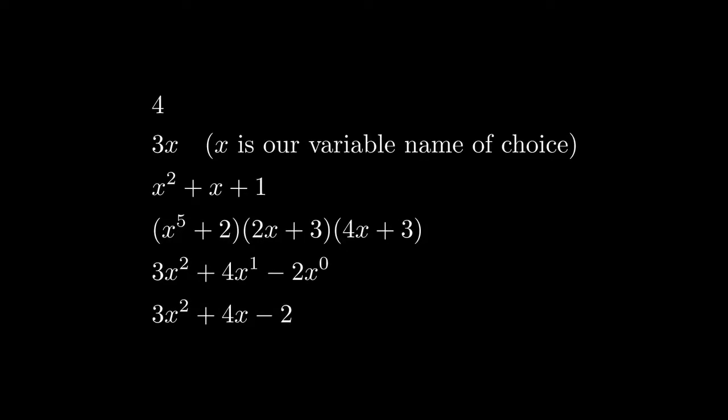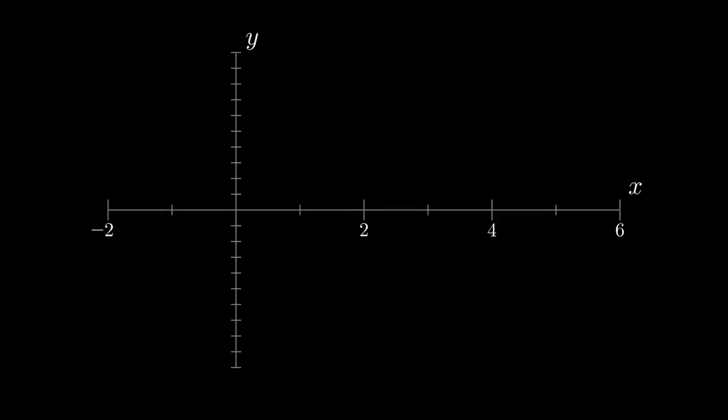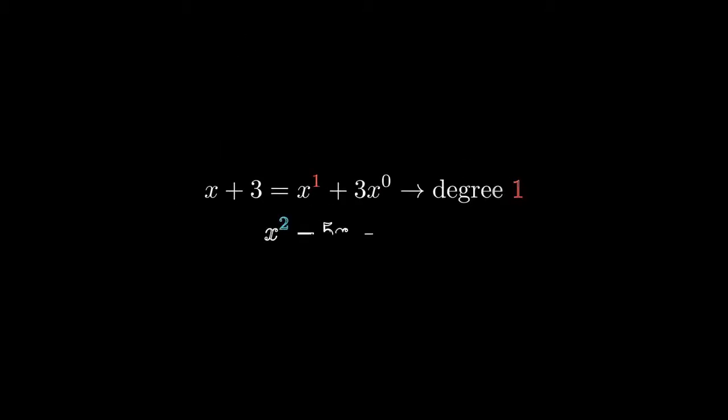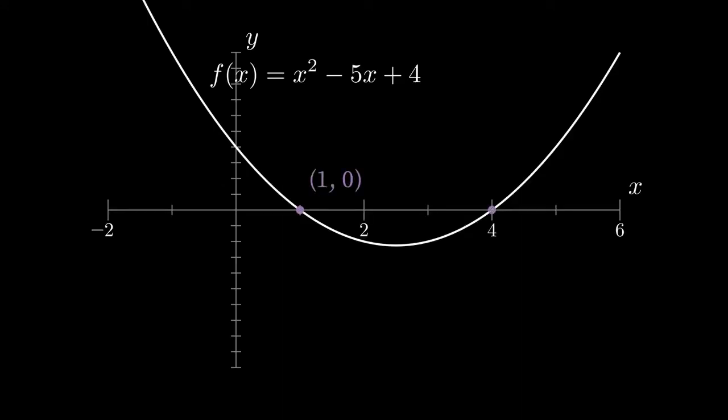Polynomials are functions, and we often think of functions as graphs. Here's what one such polynomial looks like as a graph. It's natural to ask what the highest power of x in the polynomial is. We call this the degree, so here f has degree 2. It's also natural to ask where the polynomial evaluates to 0. We call these the roots. f has roots at 1 and 4.